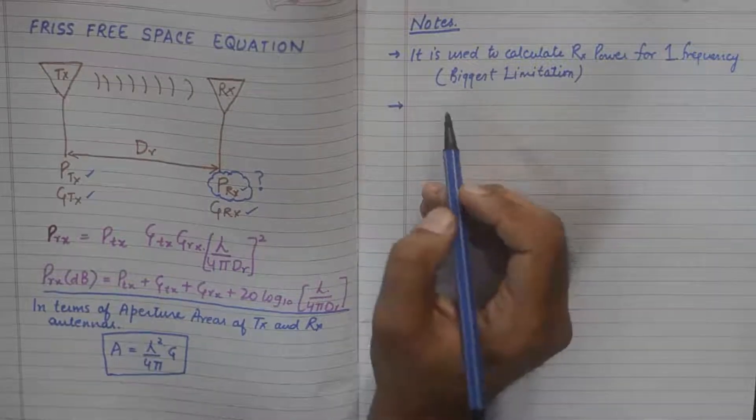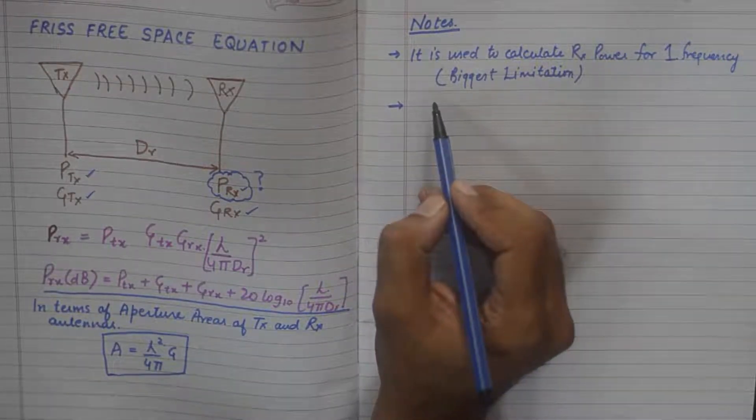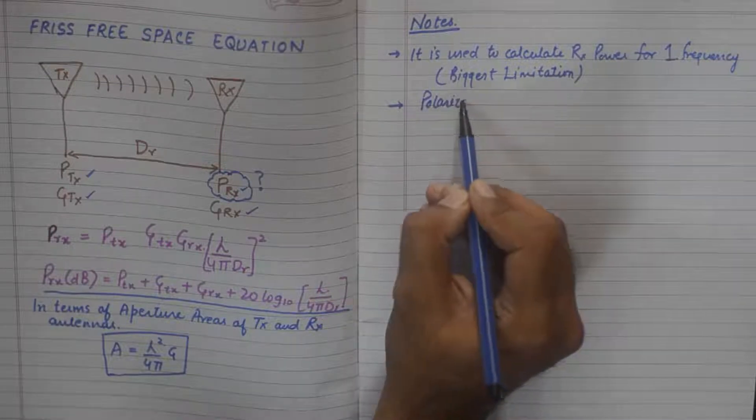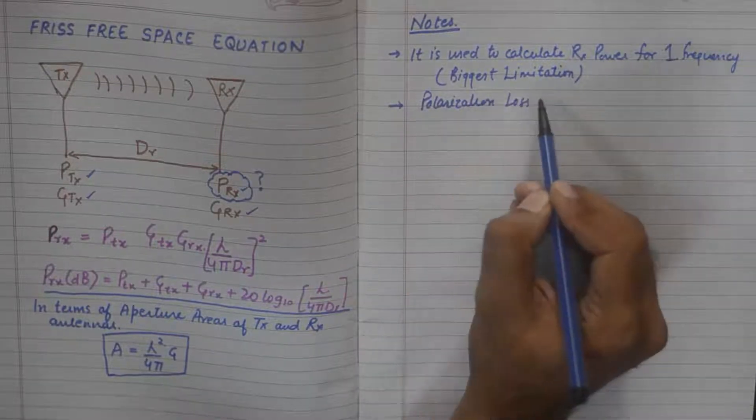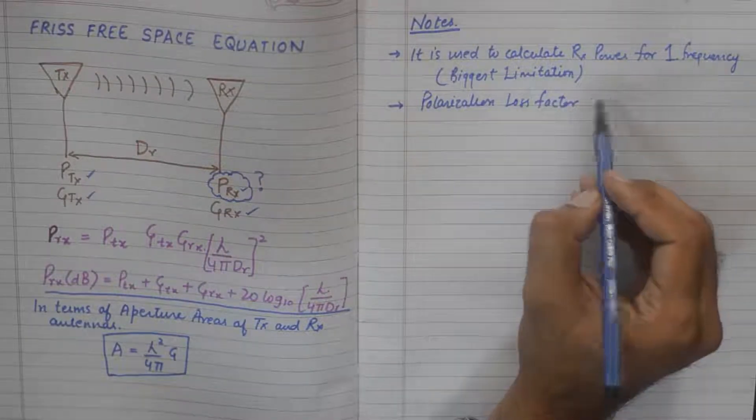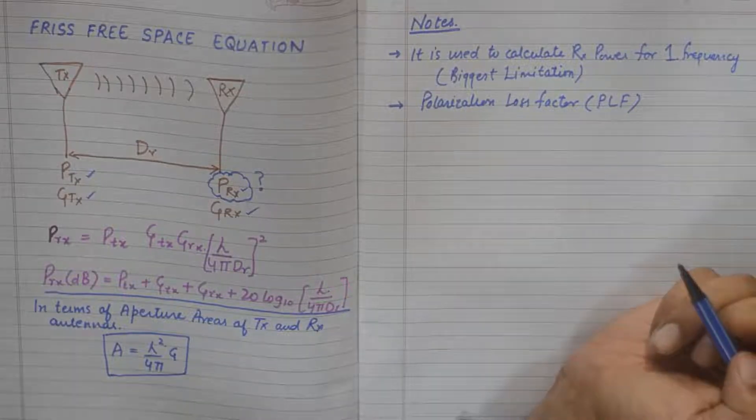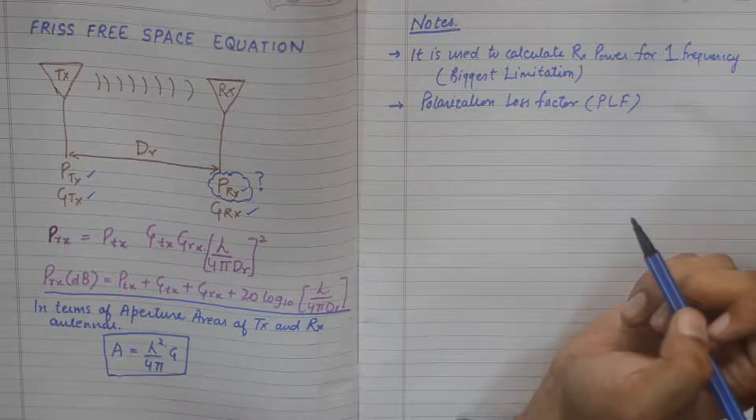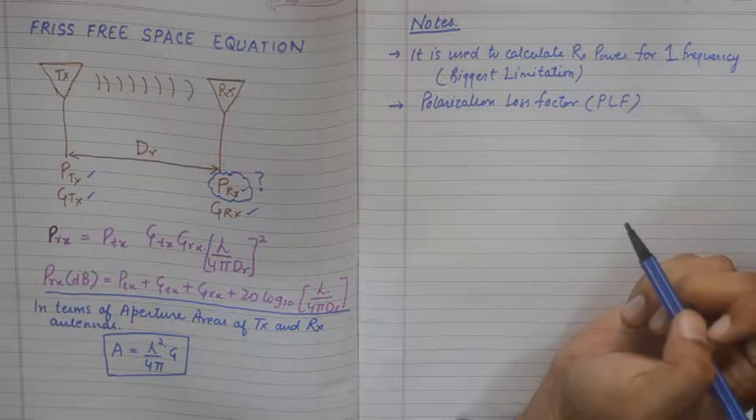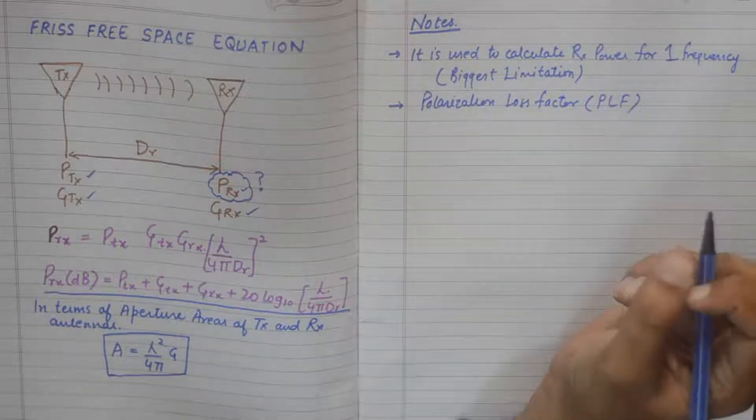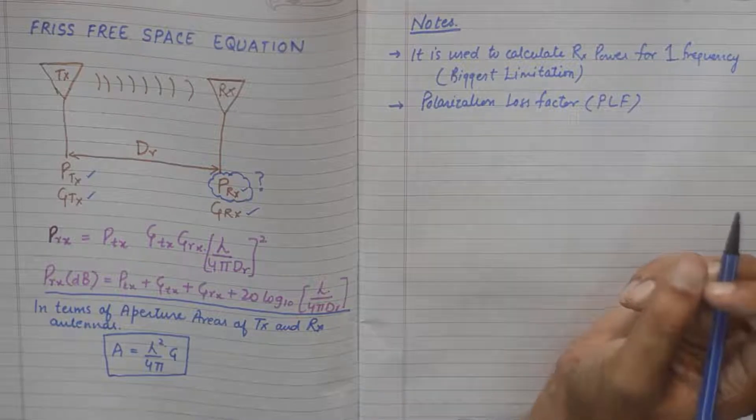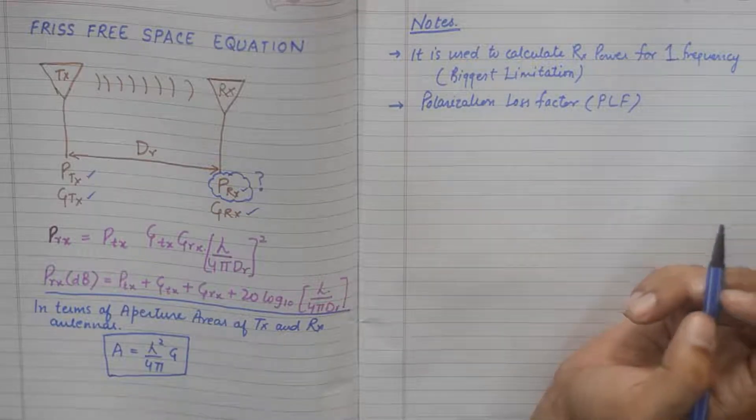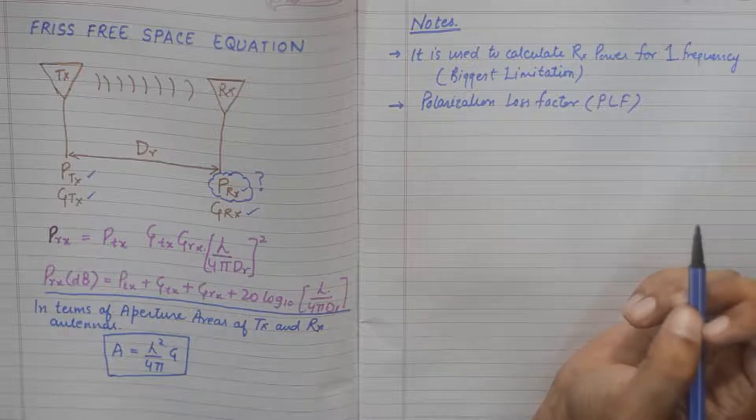And the second note about Friss Free Space Equation is that it does not take into account the polarization loss factor. It is also popularly known as PLF in antenna terminology. Now both the antennas may not be polarized in the same manner. For example, one antenna could be horizontally polarized, the other could be vertically polarized. Now this may cause some additional losses in the received power by a receiver for a particular transmission.